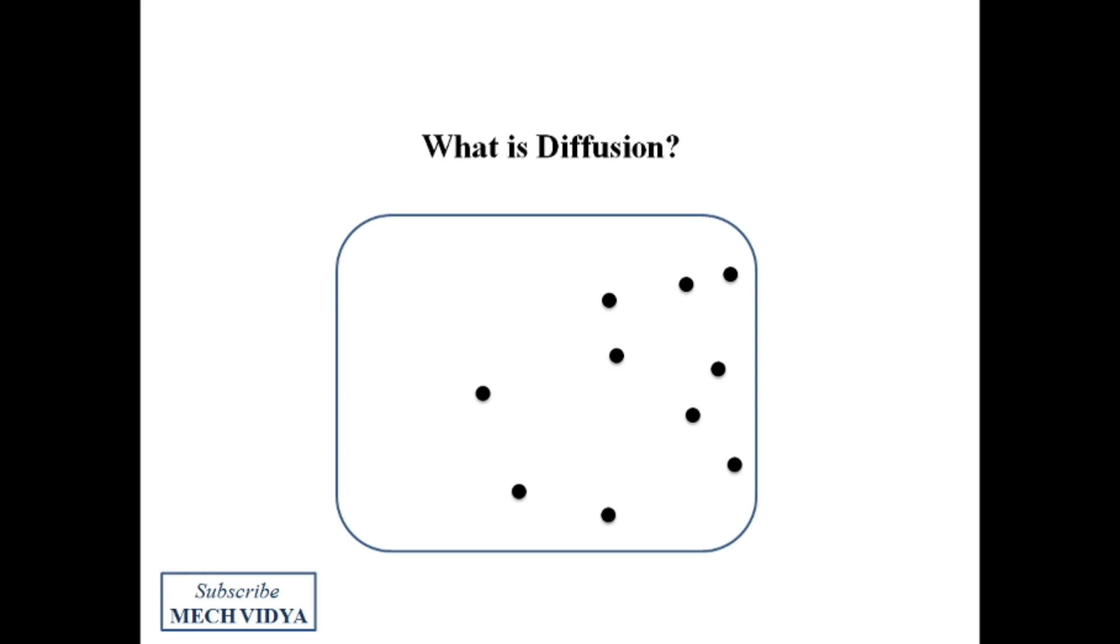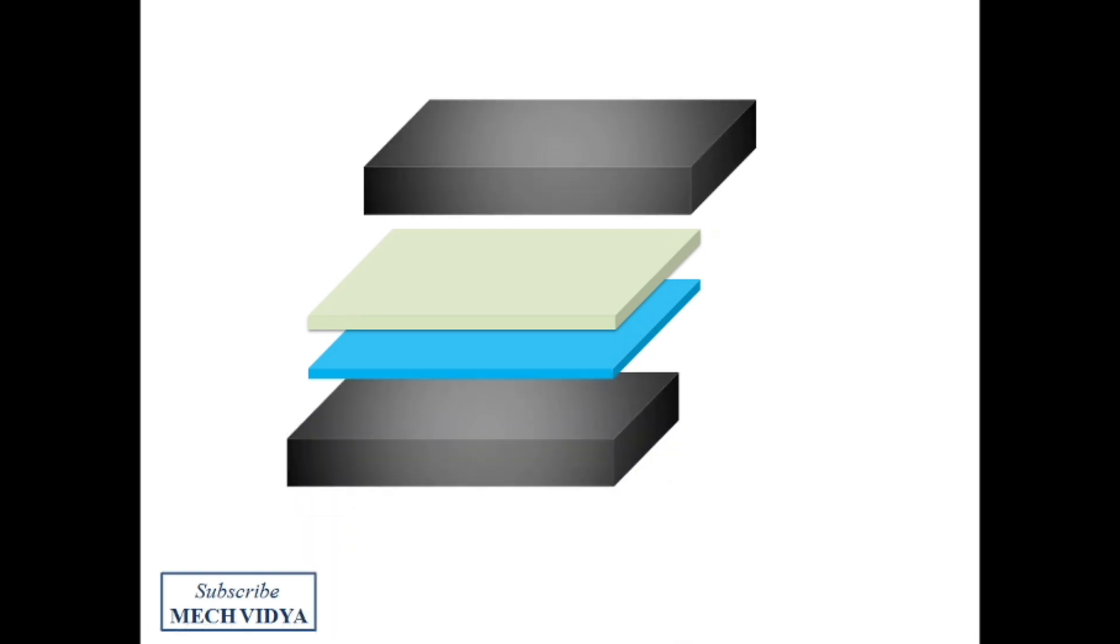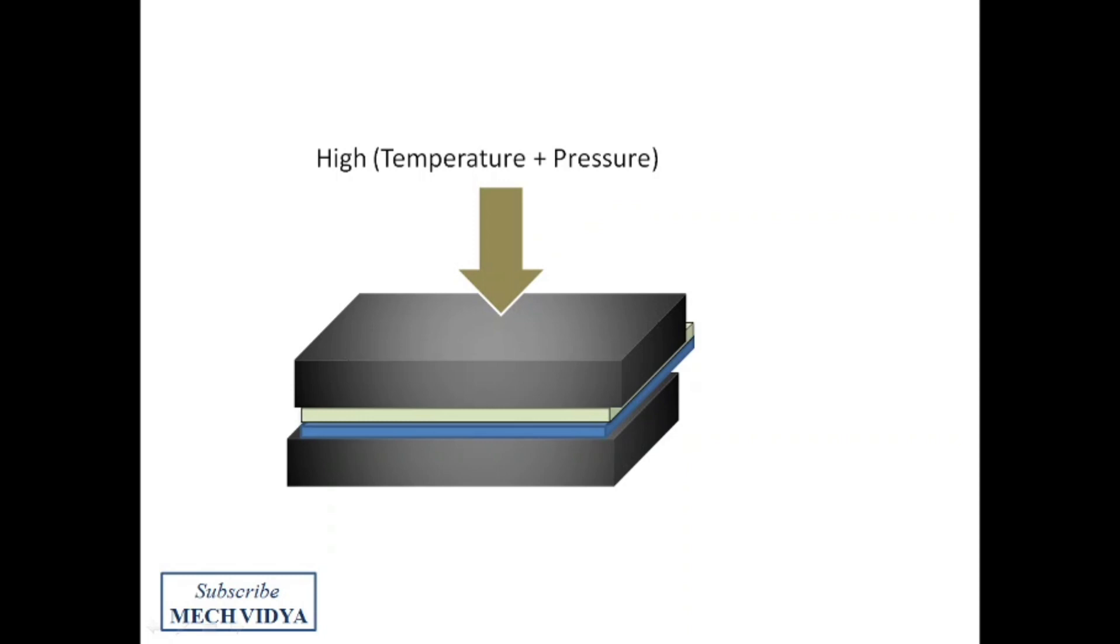So here we have two metal plates which are to be joined permanently. For this, we will put the plates under high compressive loads and apply pressure at elevated temperature. When the metals reach the plastic state, we will get a permanent bond.